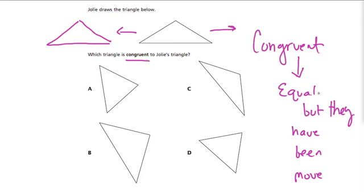So congruent means the shapes are equal in every way—the angles, side lengths, and all of that. But they have been moved or rotated or turned. A fancy way of saying that is they've been translated or rotated in some way. So we slid them somewhere or turned them in some way.